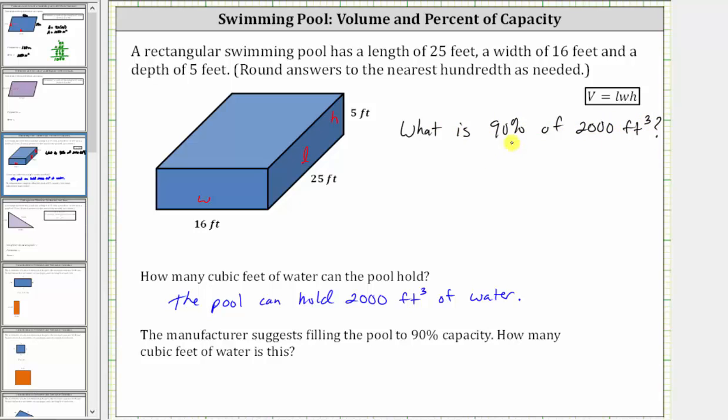To find the percent of a number, we convert the percent to a decimal and multiply. 90% as a decimal is 0.90, or just 0.9. Therefore, to find 90% of 2,000 cubic feet, we need to determine 0.9 times 2,000.